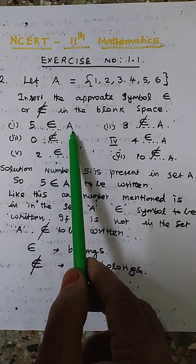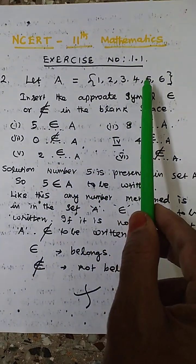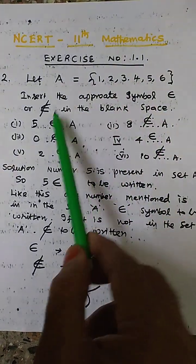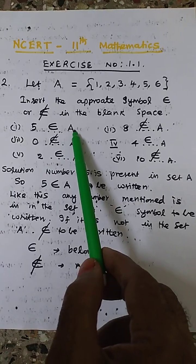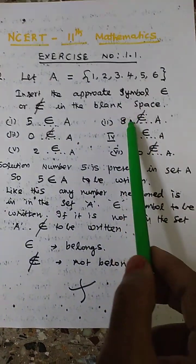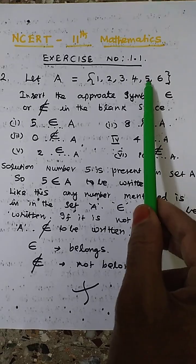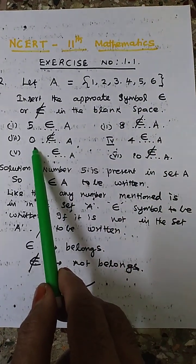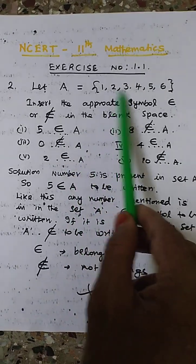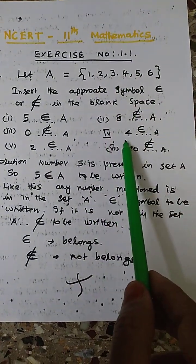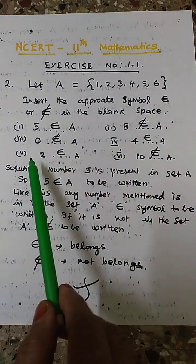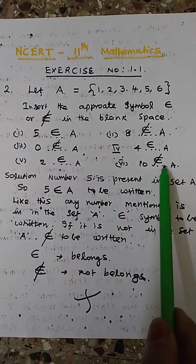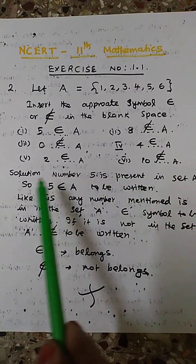5 — A: the element 5 is inside the set A, so this symbol means belongs to A. 8 is not available in the set A, so it does not belong to A. 0 is not available in the set A, so 0 does not belong to A. 4 belongs to A, 2 belongs to A, and 10 does not belong to A. Like this, you have to fill in the blanks with belongs or not belongs.